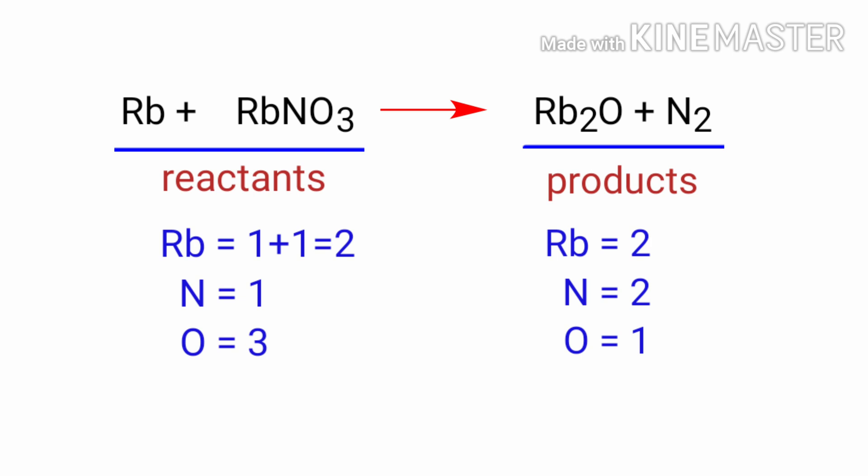In the reactants side, there are two rubidium atoms, one nitrogen atom, and three oxygen atoms present. At the products side, there are two rubidium atoms, two nitrogen atoms, and one oxygen atom present.